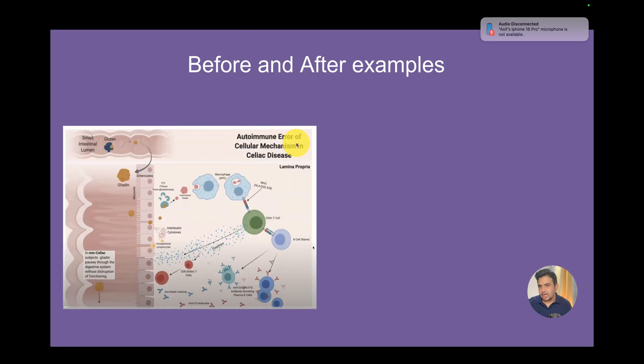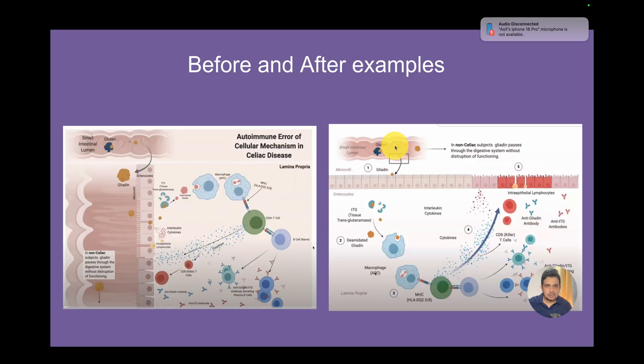Now we can look at another abstract. This is the autoimmune error of cellular mechanism in celiac disease. Here is actually the gluten passing through the intestinal lumen. Just for improvement purpose, not for critics purpose, when I need to see this, I need to turn my head perpendicular. I need to drop my head to see this flow from here to here. And then you can see the arrows are again going clockwise. If we can try to improve it, maybe I need to just make it like in this direction. Here would be before and after.